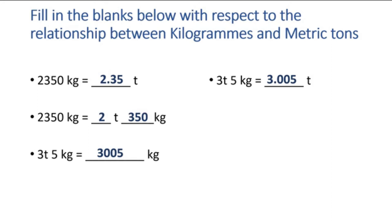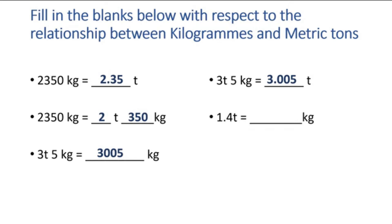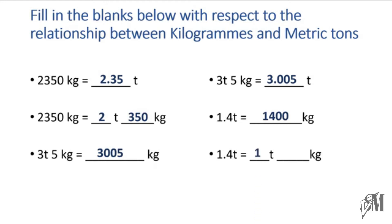Look at this example: 1.4 tons to be written in kilograms. Tons to kilograms — you have to multiply by one thousand. 1.4 multiplied by one thousand gives you 1400 kilograms. And then the final example: 1.4 tons in tons and kilograms. Here, 1.4 tons has 1 ton, and this 0.4 tons is equal to 400 kilograms, because 0.4 multiplied by one thousand is equal to 400.